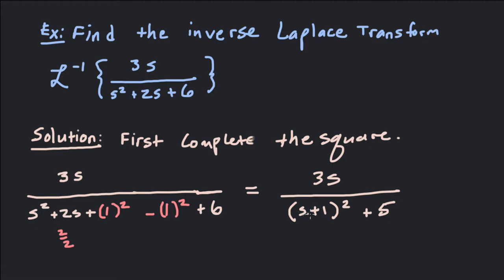s plus 1 squared turns out to be s squared plus 2s plus 1. I've done 6 minus 1 to make sure that adding 1 and subtracting 1 doesn't change the denominator — I'm just adding 0. Now I've got a completed square, but it doesn't quite look like what it should for a cosine transform. A cosine transform needs to have s plus 1 in the numerator, and we don't have that right now.